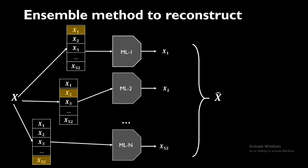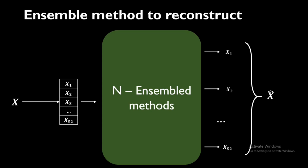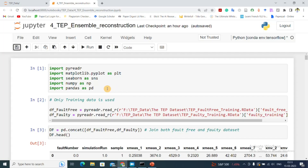Hopefully, the reconstruction error will be significantly higher for anomalous data compared to the fault-free dataset. To summarize: our input x, which has 52 features, goes into the ensemble method and outputs x1 through x52. Combining these gives us reconstructed x-hat. Using x-hat and x, we calculate the reconstruction error.